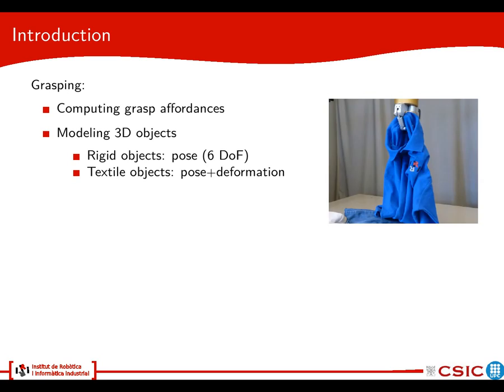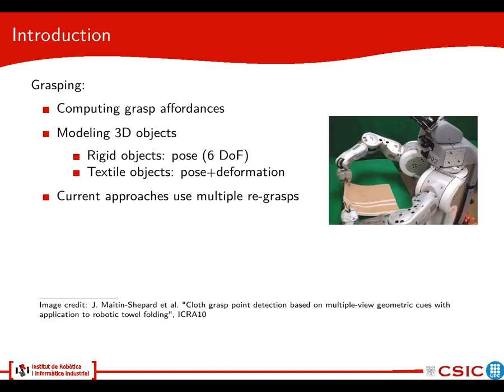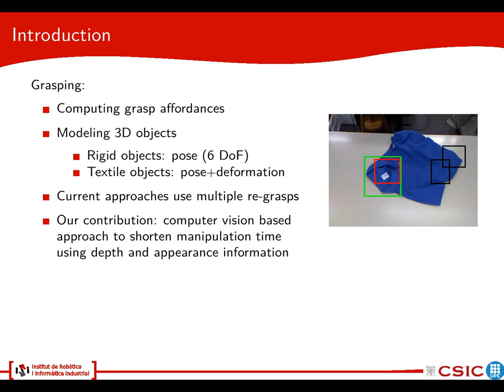For textile objects it is a bit more complicated because in addition to the 6 degrees of freedom for the pose, we have to account for the deformation parameters which can be in a very high dimensional space and thus very difficult to model. Current approaches to manipulation of textile objects usually deal with a series of re-grasps to bring the object into the desired state and perform an open loop manipulation task. What we want to do is to propose a computer vision based approach that is able to shorten this manipulation time by giving information about which part we are grasping the object from.